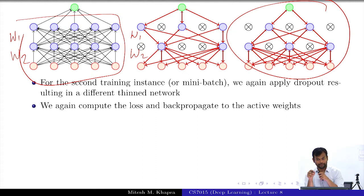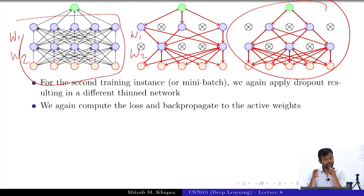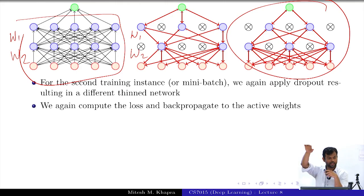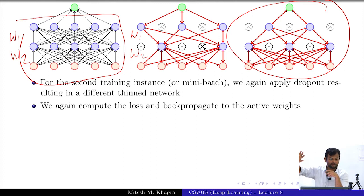Weights active for both the first and second training instances get updated twice; those active only once get updated once. Over time, many of these weights are shared across all the networks being sampled. Even though a particular network is sampled only a few times, its weights get updated many times via the other networks which share those weights.